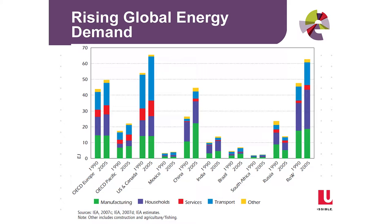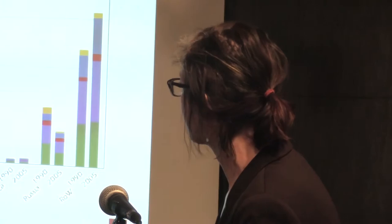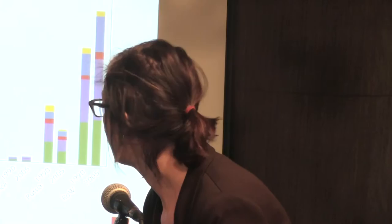This is a chart I really like — it's Global Energy Demand in 1990 and in 2005. With the exception of Russia, demand has risen in every region of the world, and we haven't had a proportionate change in terms of decarbonization. This is an issue we need to deal with — globally, we've got rising energy demand.